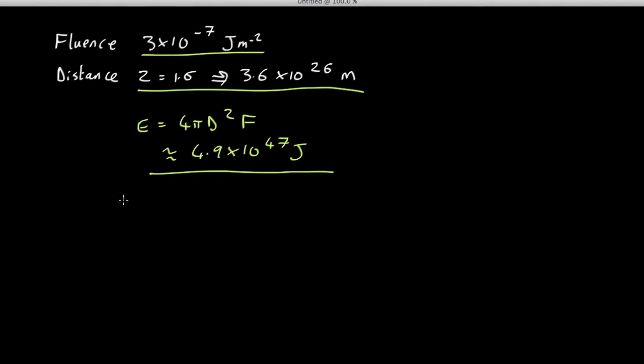To put it in comparison, how much matter would you have to convert to energy to make this? Well, the energy you get from converting matter is given by E = mc². So to work out the mass, you simply take the energy divided by c², the speed of light squared. So this corresponds to a mass of about 5.4 × 10³⁰ kilograms, which is 2.7 times the mass of the Sun. So that's how much matter you'd have to convert to energy to power this.